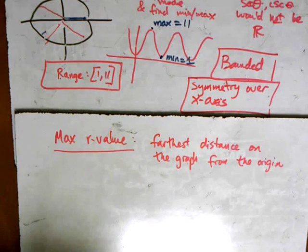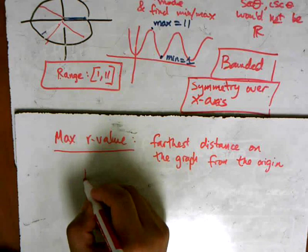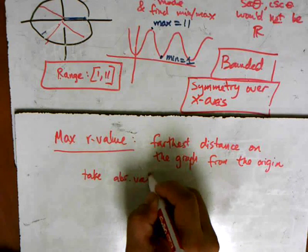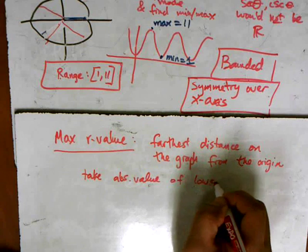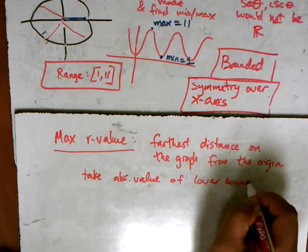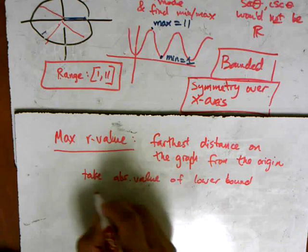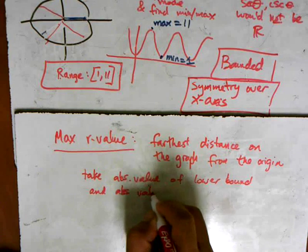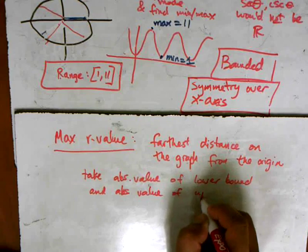So the way we find the r-value is to take absolute value of lower bound and the absolute value of the upper bound.